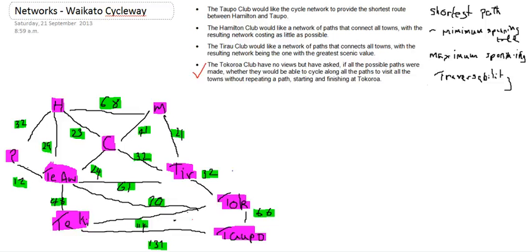In the last video we were looking at the Waikato cycle waves problem and we looked at the traversability. At that point, if we were trying to go from and to Tokaroa and travel around all the towns, the network was not traversable. But that might change when we do some of the other parts.